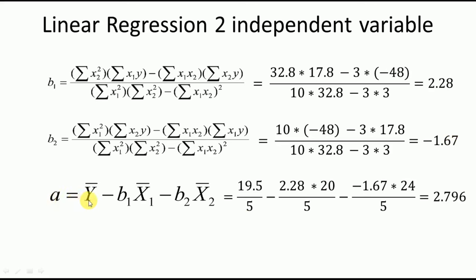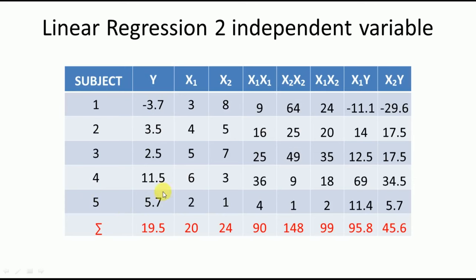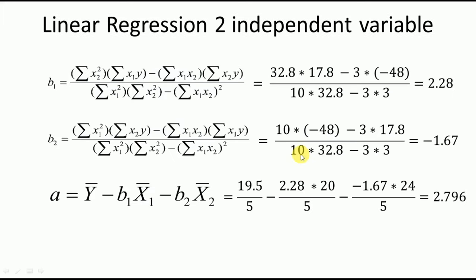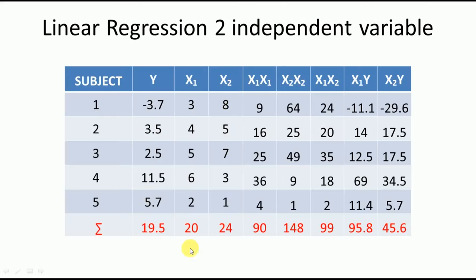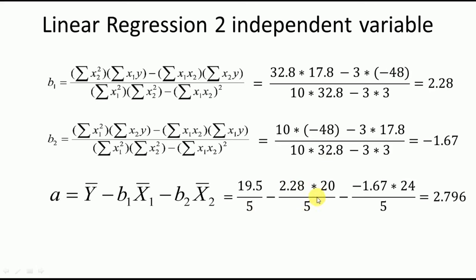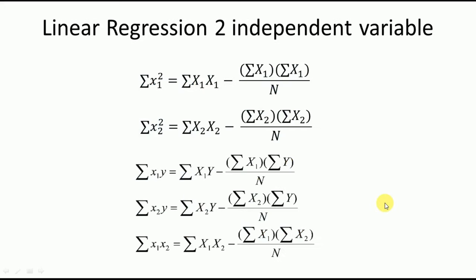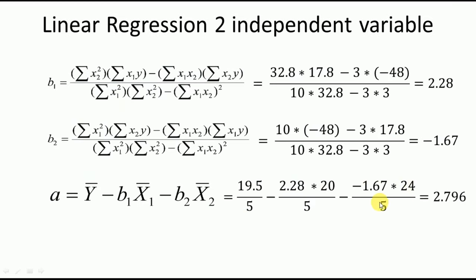Now we calculate the intercept a = ȳ − b1·x̄1 − b2·x̄2. The mean of y is Σy/n = 19.5/5. The mean of x1 is Σx1/n = 20/5. The mean of x2 is Σx2/n = 24/5. With b1=2.28 and b2=−1.67, solving this equation gives a = 2.796.